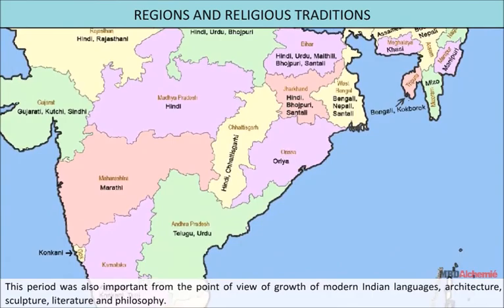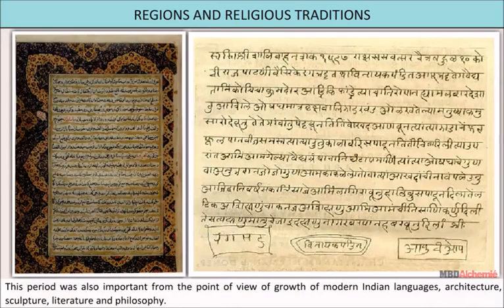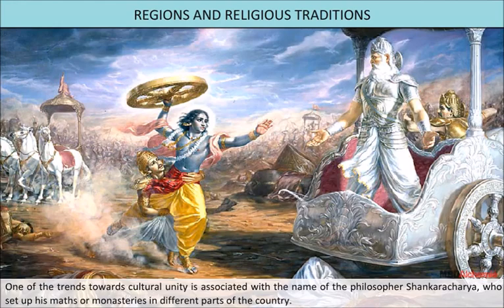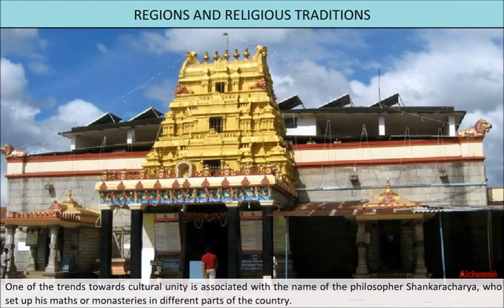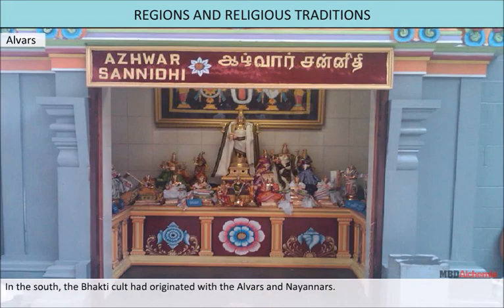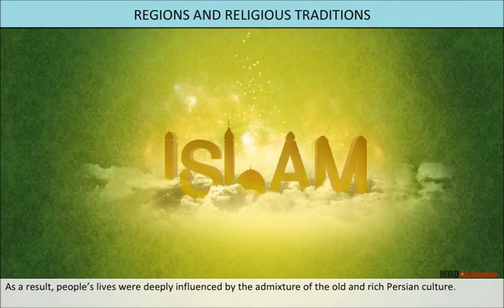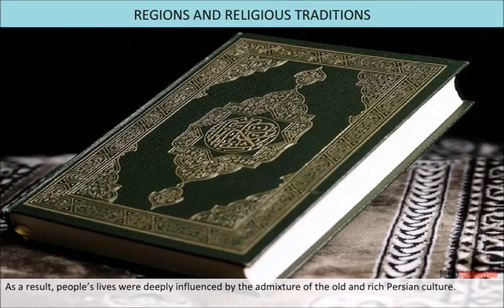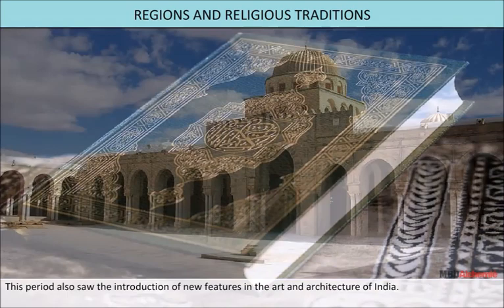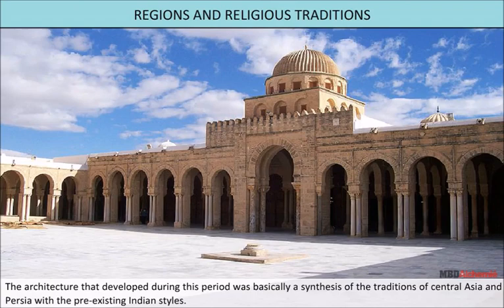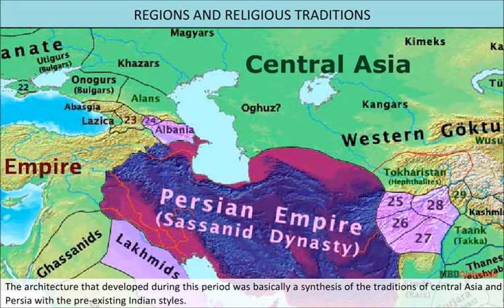This period was also important from the point of view of the growth of modern Indian languages, architecture, sculpture, literature and philosophy. One of the trends towards cultural unity is associated with the philosopher Shankaracharya, who set up his mutts or monasteries in different parts of the country. In the south, the Bhakti cult had originated with the Alvars and Nainnars. It was in this period that India had its first contact with the then new religion of Islam. As a result, people's lives were deeply influenced by the admixture of the old and rich Persian culture.